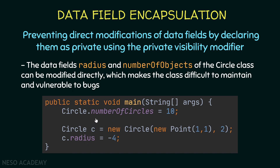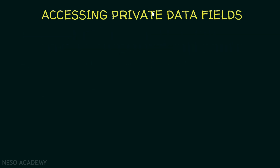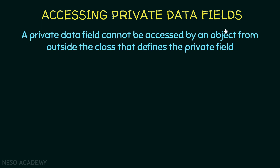This can also be fixed using encapsulation. To apply encapsulation on number of circles and on the radius, all we have to do is declare them as private. After we declare them as private, we will not be able to access them using the dot operator. A private data field cannot be accessed by an object from outside the class that defines it.